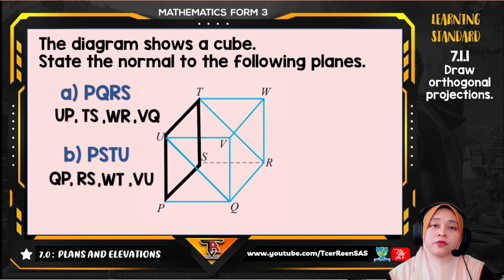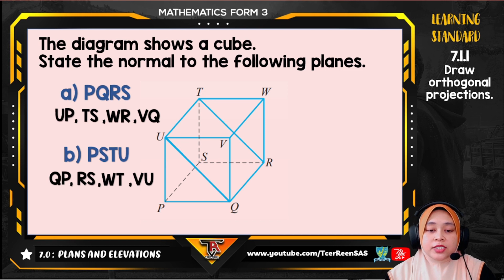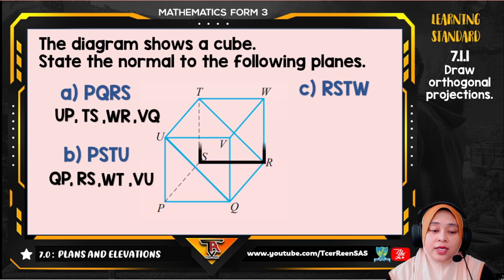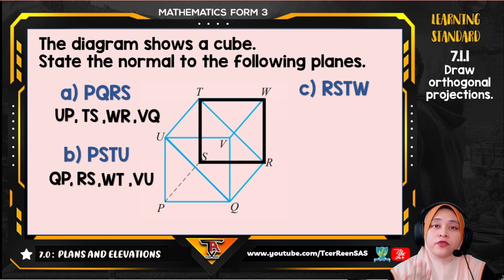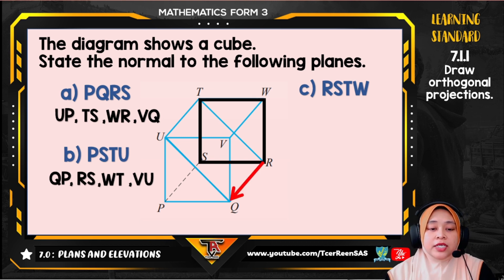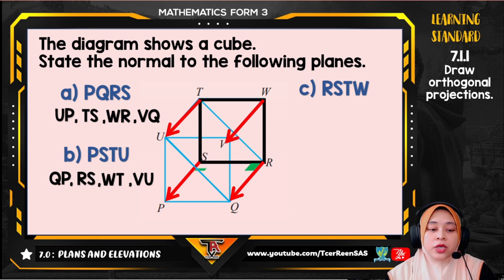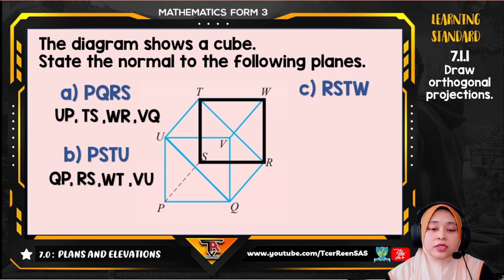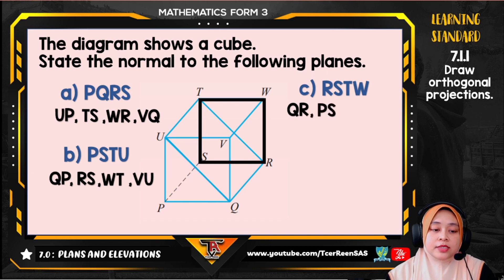The next plane is RSTW — the plane that is vertically in front of you. The lines that make 90 degrees from this plane are the normals to it. The normals to plane RSTW are QR, PS, UT, and VW.